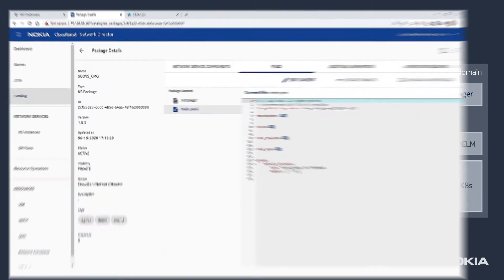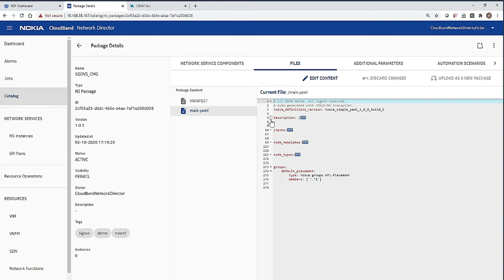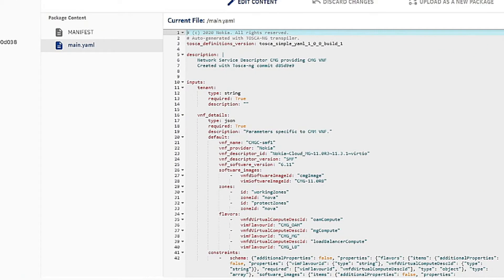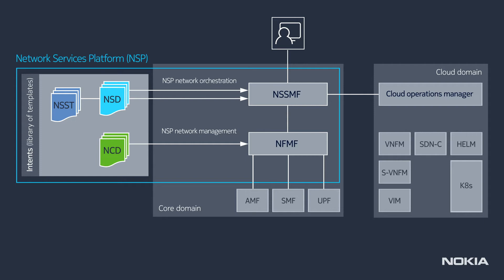The templates describe the attributes and requirements that are necessary to realize network slices, network functions, or data center networks, as shown in this example of a Network Service Descriptor. The NSP selects the proper templates depending on the intent of the operator. This intent is expressed by the operator using the NSP network orchestration app. Alternatively, the intent can be passed to the NSP through its API.